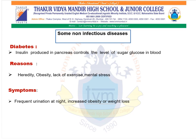Now we are going to study about some non-infectious diseases. The first disease we are going to study about is diabetes. In the case of diabetes, insulin produced in the pancreas controls the level of sugar — glucose — in the blood. If insulin is secreted in low quantity, the glucose level cannot be controlled, and this disorder is called diabetes. Reasons for diabetes include heredity, obesity, lack of exercise, and mental stress. Symptoms of diabetes include frequent urination at night and increased obesity or weight loss.